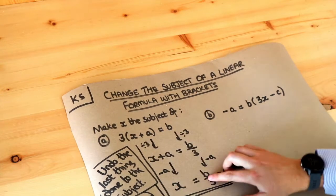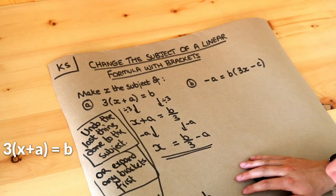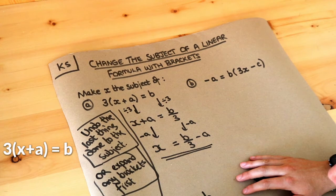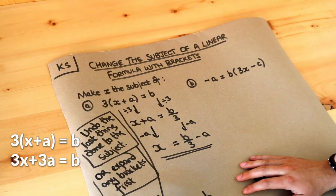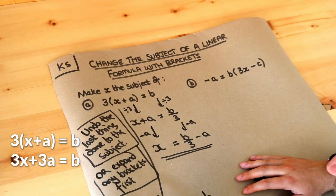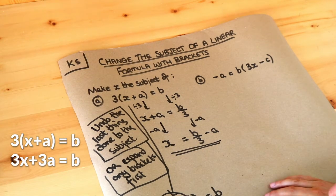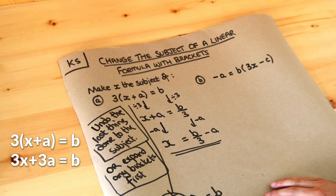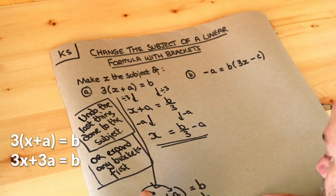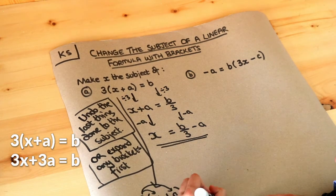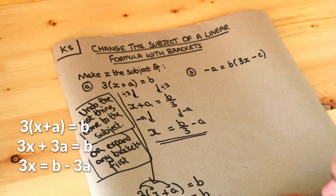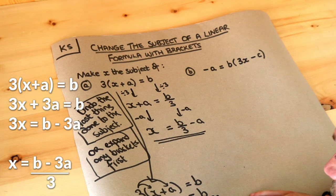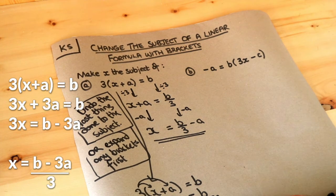If I was to expand this — remember to expand a single bracket, we multiply each thing inside the bracket by the thing on the front. So that 3 gets times by the x, and the 3 gets times by the a. So 3 times x is 3x, and 3 times a is 3a, giving plus 3a. Now the story of x: it's been multiplied by 3, then we're adding 3a. We undo the last thing, so we subtract 3a from both sides to get rid of the plus 3a. That gives 3x on the left, since minus 3a and plus 3a cancel, and b minus 3a on the right. Then to get rid of the times by 3, we divide both sides by 3, and we get x equals b minus 3a all over 3.